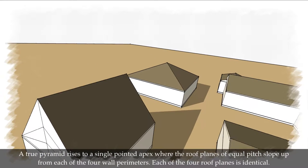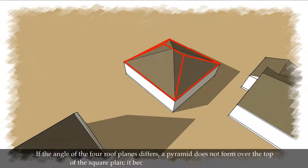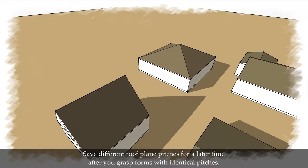A true pyramid rises to a single-pointed apex, where the roof planes of equal pitch slope up from each of the 4 wall perimeters. Each of the 4 roof planes is identical. If the angle of the 4 roof planes differs, a pyramid does not form over the top of the square plan. It becomes more similar to a hip roof. Save different roof plane pitches for a later time after you grasp forms with identical pitches.